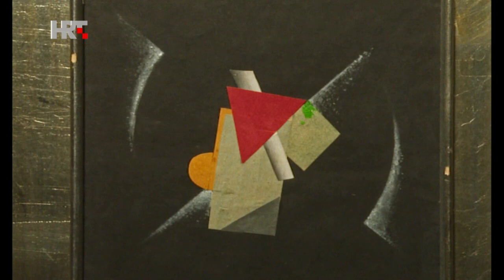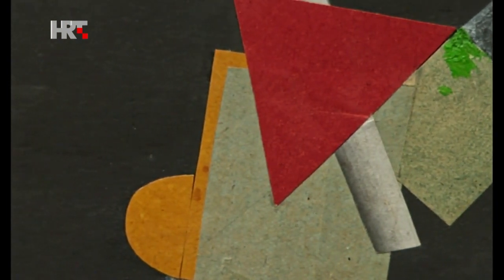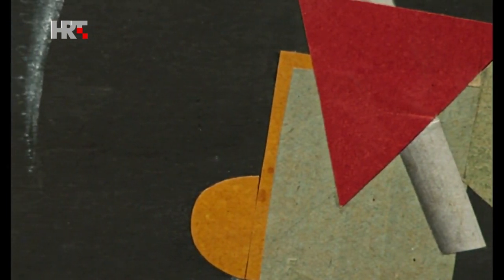A small picture titled Pafama is the first famous abstract composition of Croatian art. The colored paper is combined with pastel, composed of basic geometrical shapes: the triangle, the rectangle, the circle, and the square.